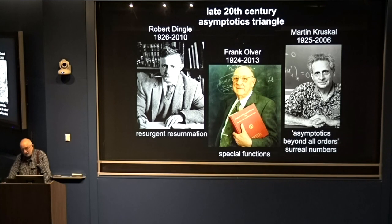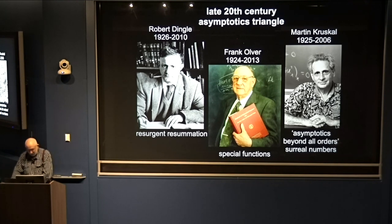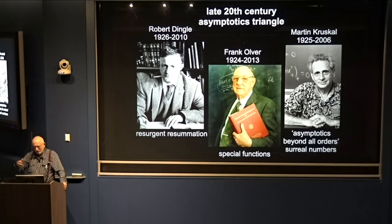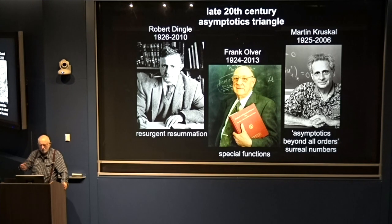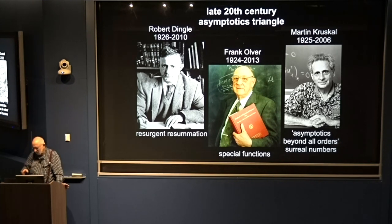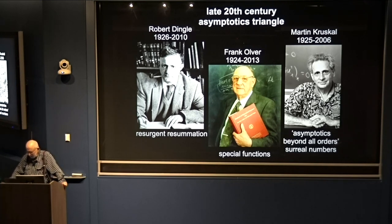Kruskal was a very imaginative person. He was much attracted by John Conway's surreal numbers, and he had the idea that that way of representing numbers might be useful in making asymptotics rigorous from the beginning. Well, that didn't lead anywhere, and I don't think it was right. But Martin Kruskal was so clever that he deserved to be taken seriously.